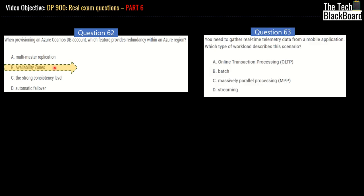Moving on with question number 63. This one asks that you need to gather real-time telemetry data from a mobile application. Which type of workload describes this scenario? So again, find out the keywords. The keyword here is real-time. Whenever we are talking about real-time, it is always related to streaming data. Right? So the other one which is closely related to the concept is batch data. Batch data is not real-time. Batch data is we collect the data and we process the data whenever some condition is met. So this is the difference between batch and streaming data.